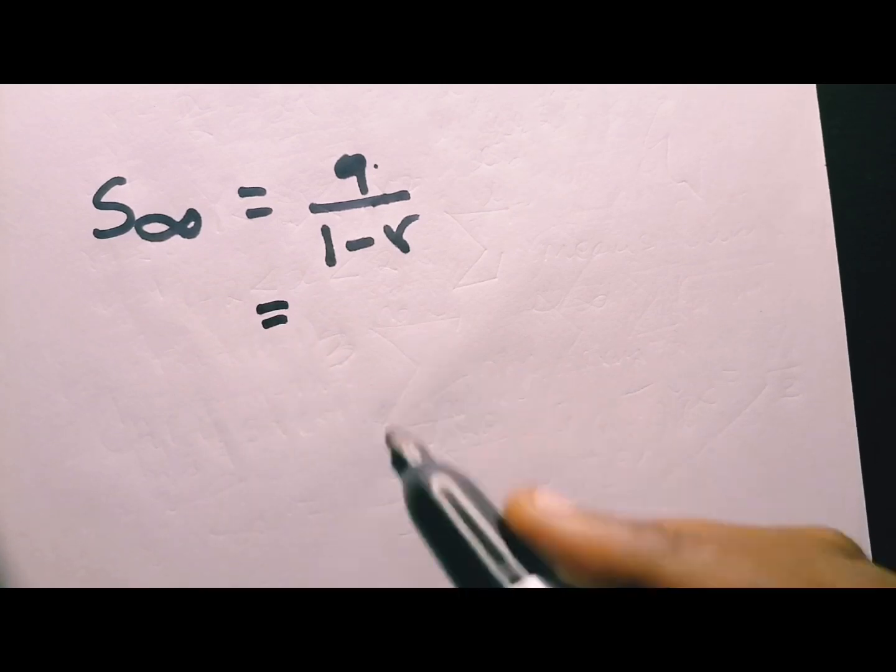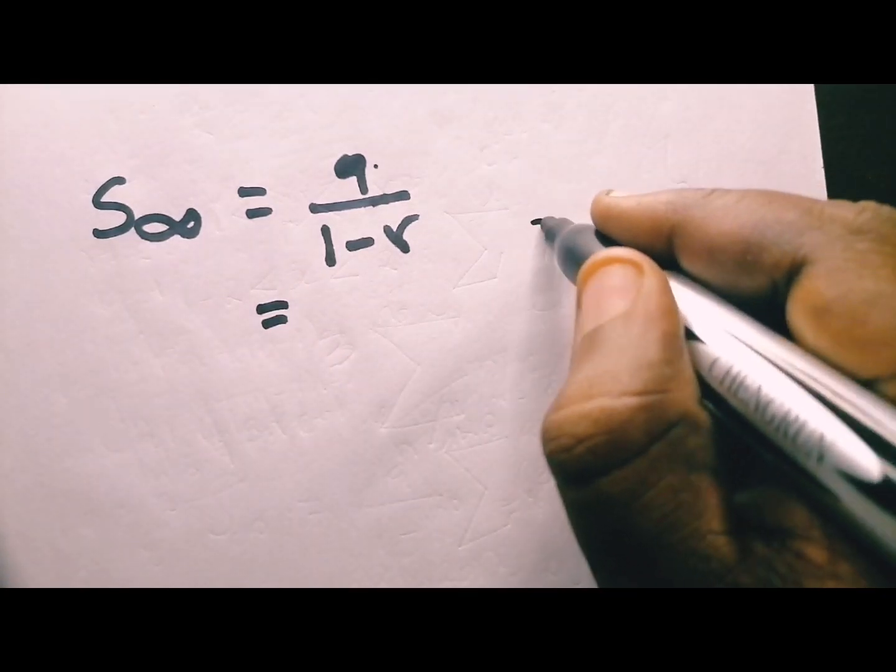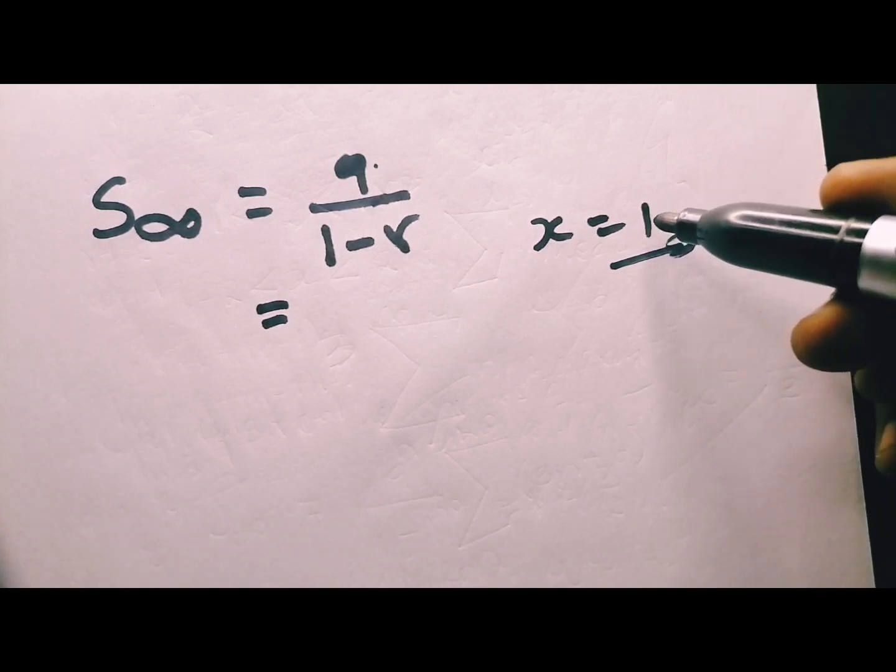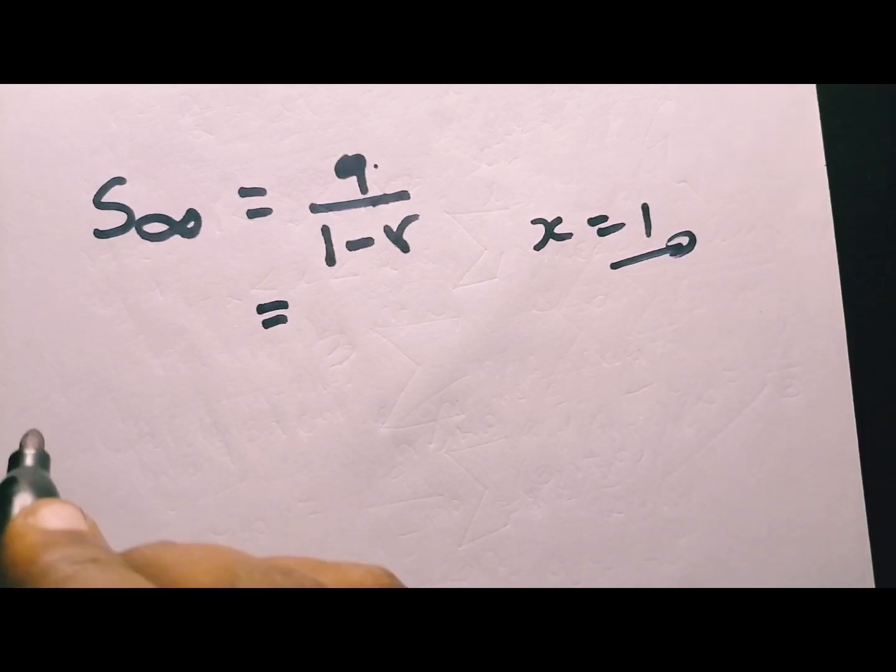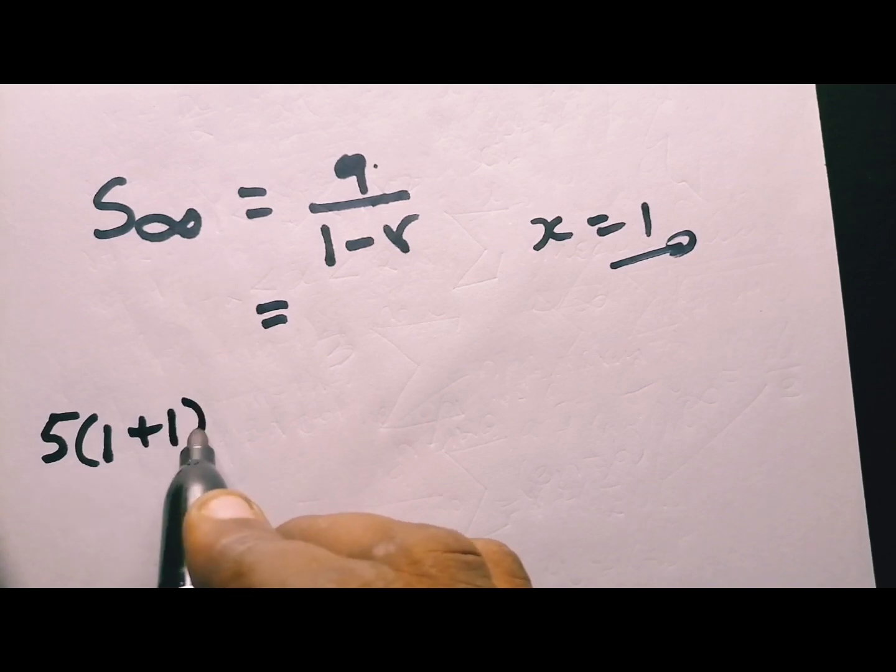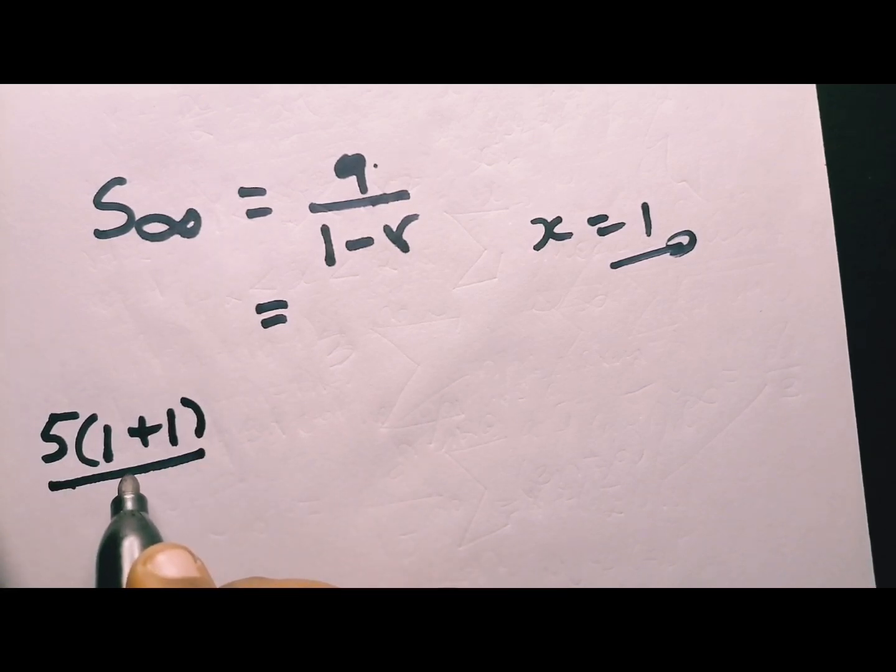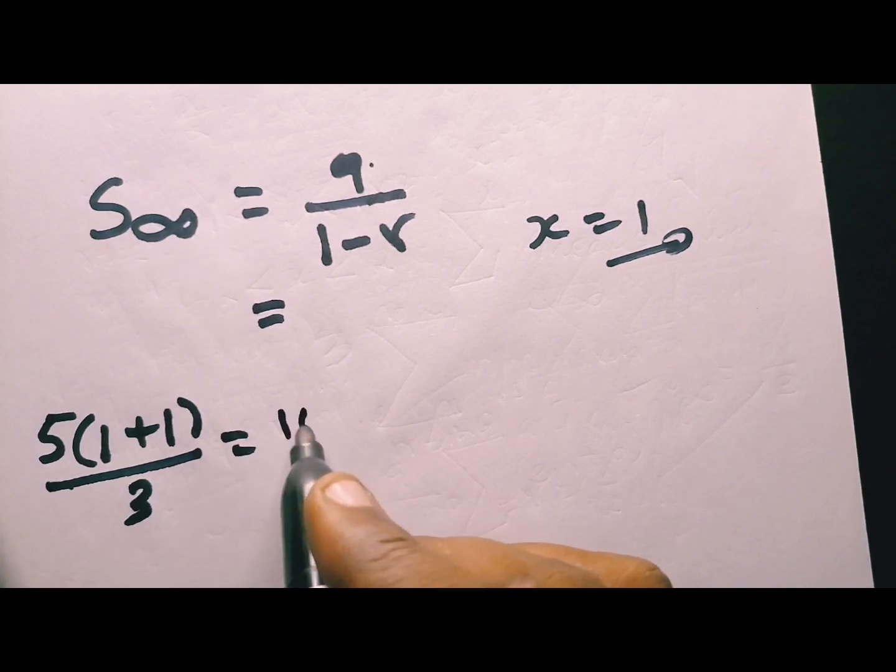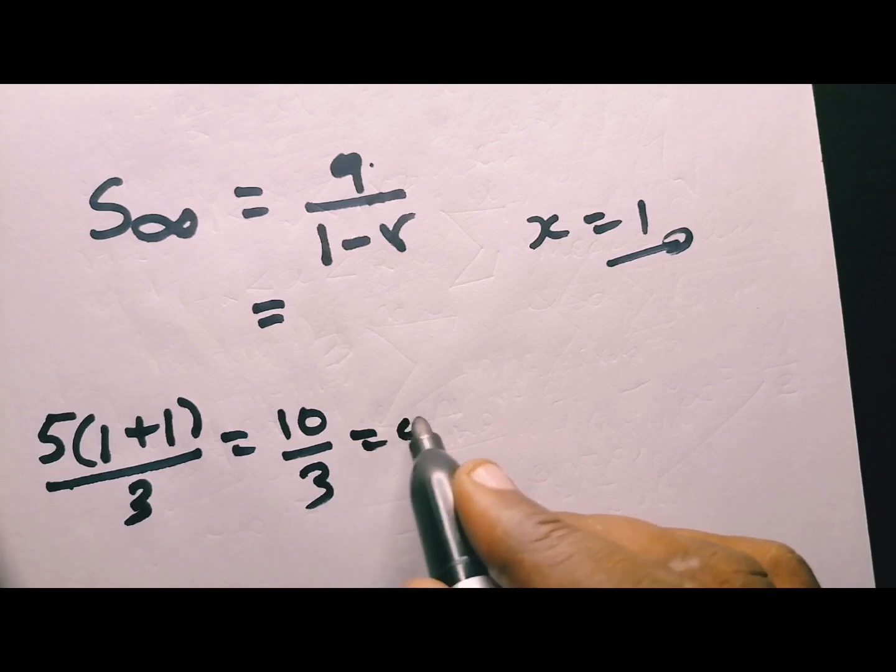How to find a in this case? They said x is equal to 1. So you take this x, you go and plug there. The first term, we have 5 into 1 plus 1 all over 3. This is going to be 5 and this is going to be 2. So 2 times 5 is 10 over 3. This is going to be 10 over 3, my first term. And this is also equal to a.